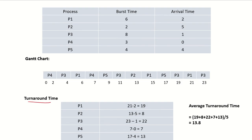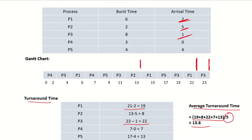For turnaround time: P1 completed at time twenty-one with arrival at two, giving a turnaround of nineteen. P2 completed at thirteen with arrival at five, giving a turnaround of eight. P3 completed at twenty-three with arrival at one, giving a turnaround of twenty-two. The average turnaround time is 13.8. This was an example of round robin process scheduling, and the same approach can be applied with other time quanta.